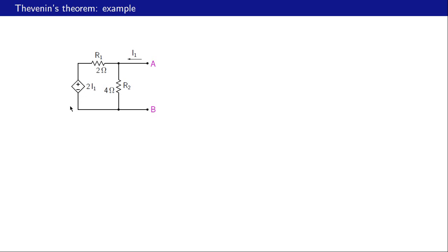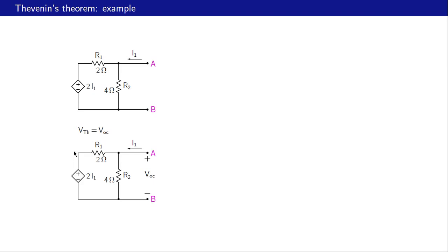Here is another example. It has a dependent source but no independent current or voltage sources. Let us obtain the Thevenin equivalent for this circuit as seen from a-b. The dependent source is a voltage source, and the voltage difference between the two nodes is two times i-one, where i-one is this current. So this voltage is controlled by a current — it is a current controlled voltage source. Let us find the Thevenin voltage first, which is the same as v-oc.